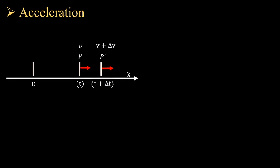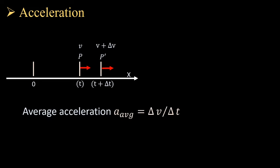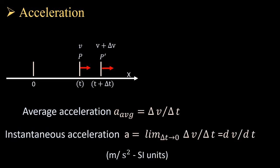Let's move on to acceleration. We sense acceleration by speeding up or slowing down our vehicle. Acceleration is the rate of change of velocity with respect to time. For example, a ball released from rest moves because acceleration due to gravity changes its velocity over time, which in turn changes its position. Average acceleration is Δv/Δt, and instantaneous acceleration is dv/dt. The SI unit for acceleration is meters per second squared.